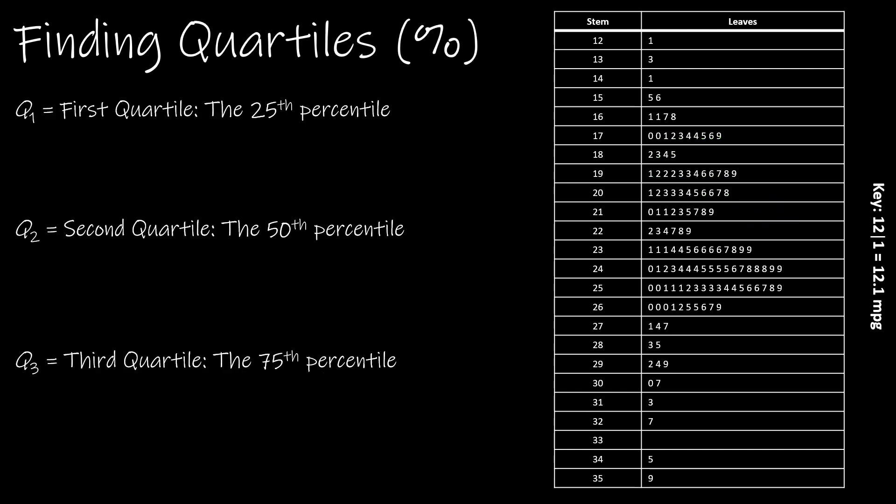Now that we're becoming familiar with finding percentiles, let's talk about the quartiles. The quartiles are simply special percentiles. If I'm trying to find the first quartile, that's the 25th percentile. The second quartile is the 50th percentile, also known as the median. And the third quartile is the 75th percentile. So typically when someone's talking about the quartiles, they're talking about Q1 and Q3, as the median, which is Q2, is usually just called the median.